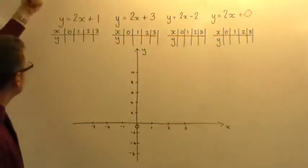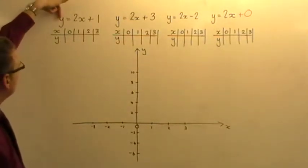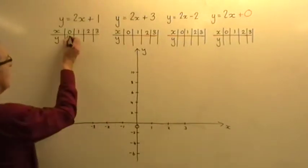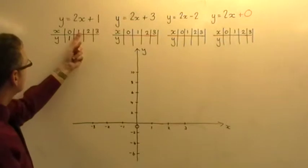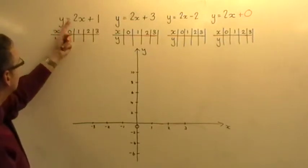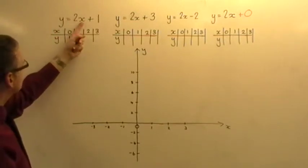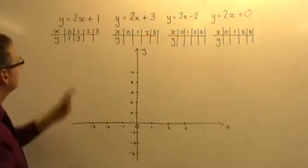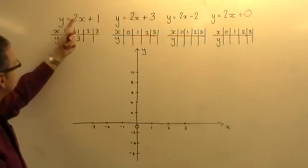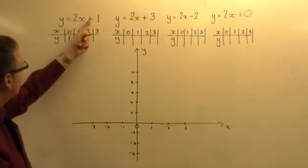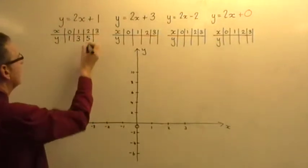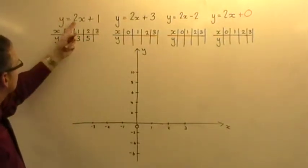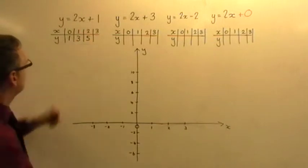So if x is 0, from the equation y will be 2 times nothing, that's nothing, add 1, you get 1. If x is 1, y will be 2 times 1, that's 2, plus 1, that's 3. If x is 2, y will be 2 times 2 is 4, add 1 is 5. And if x is 3, y equals 2 times 3 is 6, add 1 is 7.